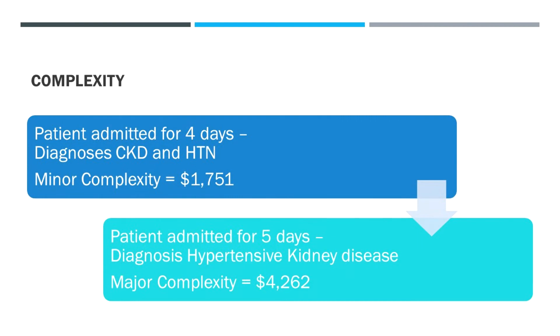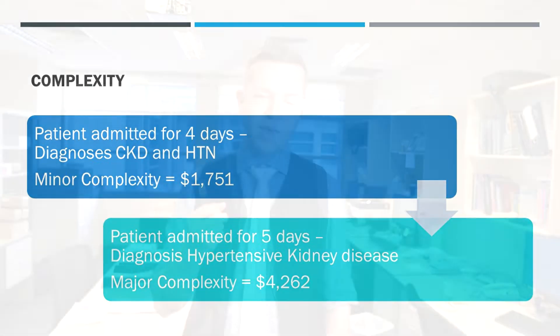A patient admitted for four days with CKD and hypertension — just minor complexity, very minimal. But if we link those two conditions together and say the CKD is secondary to hypertension, or use the nicer term 'hypertensive kidney disease,' that increases the complexity to major, which is $4,000.